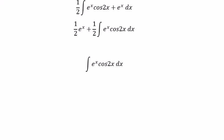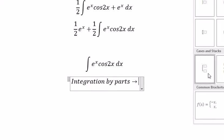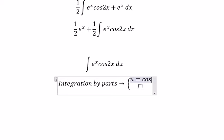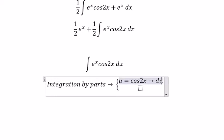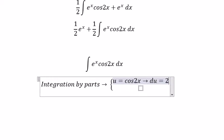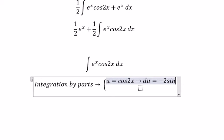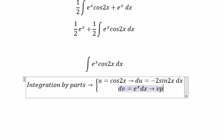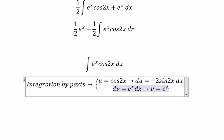We need to use integration by parts. So we have u and dv. u equals cosine 2x, du equals negative 2 sine 2x dx. dv equals e to the power of x dx, so v equals e to the power of x.